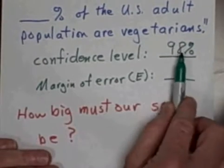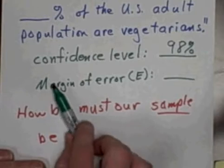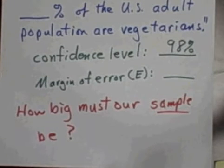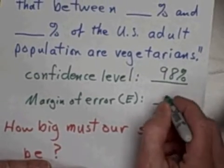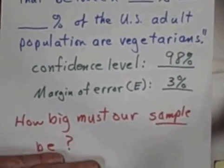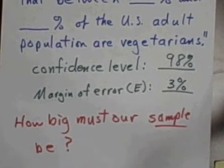Okay, so we've got a confidence level. I just picked 98%. My margin of error, well, what margin of error would we like? It should be something kind of small. I mean, a margin of error of 50% is kind of silly. How about 3%? We're going to pick a margin of error plus or minus 3%.